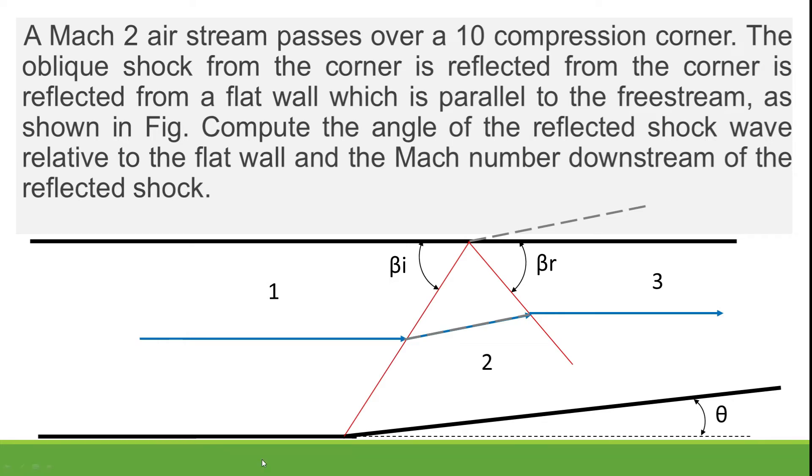Now let us go through the problem. A Mach 2 airstream passes over a 10 degree compression corner. The oblique shock wave from the corner is reflected from a flat wall which is parallel to the free stream as shown in figure.